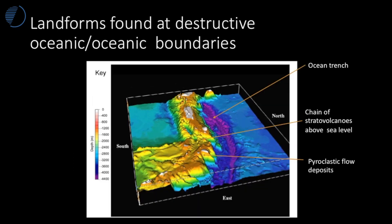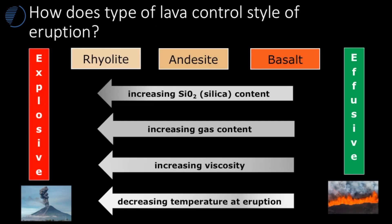What landforms would you expect to see at destructive plate boundaries? You would expect to see a deep ocean trench alongside the boundary. This is the oceanic plate being subducted. Above this you get a chain of volcanic islands — stratovolcanoes formed above sea level — and these produce highly explosive eruptions often leading to hazards such as pyroclastic flows, lava bombs, and ash ejected high into the atmosphere.